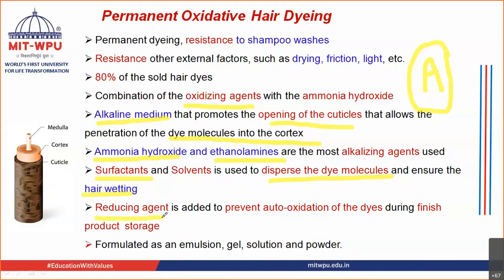Reducing agents are also added — their role you will understand better once I explain the chemistry in the next few slides. They basically prevent the auto-oxidation of the dyes during finished product storage — I will explain this in detail later. They can be formulated as emulsions, gels, solutions, and powders. Emulsion and powder form are the most common formulations available in the market.